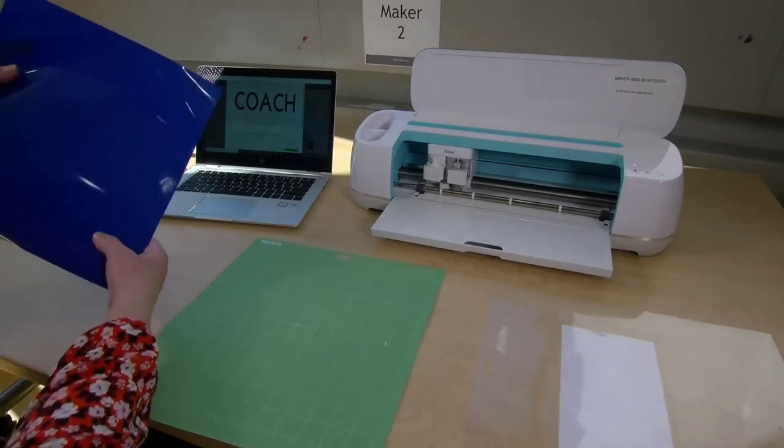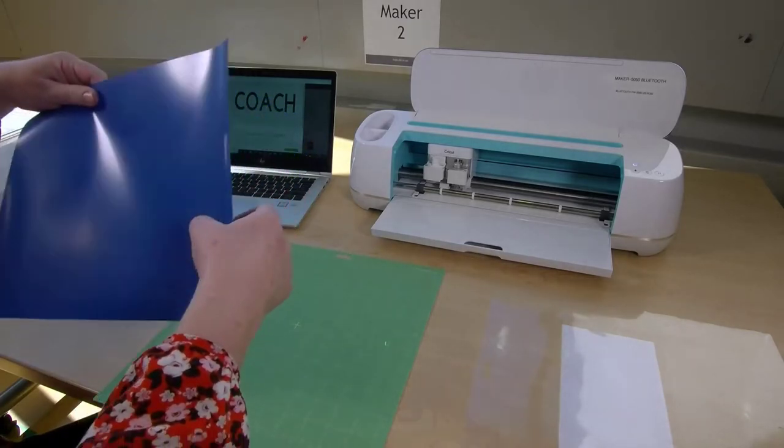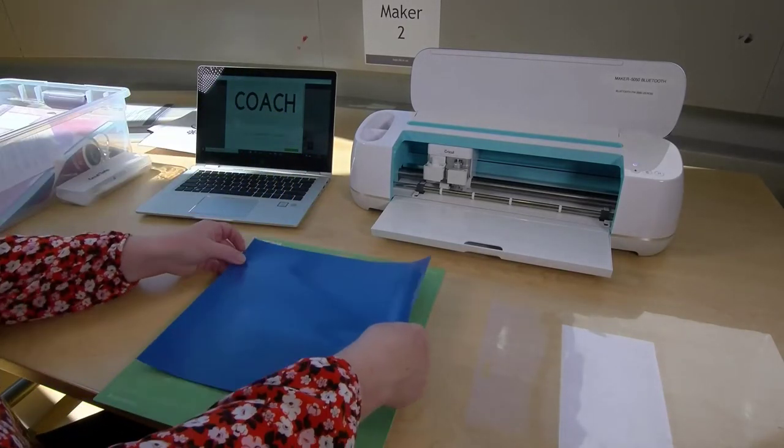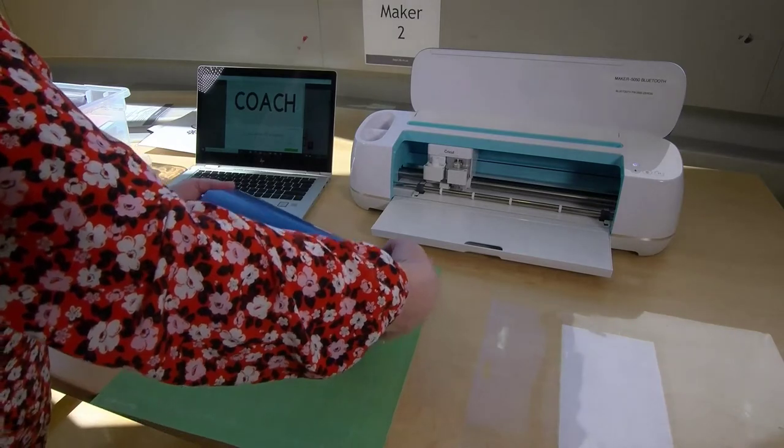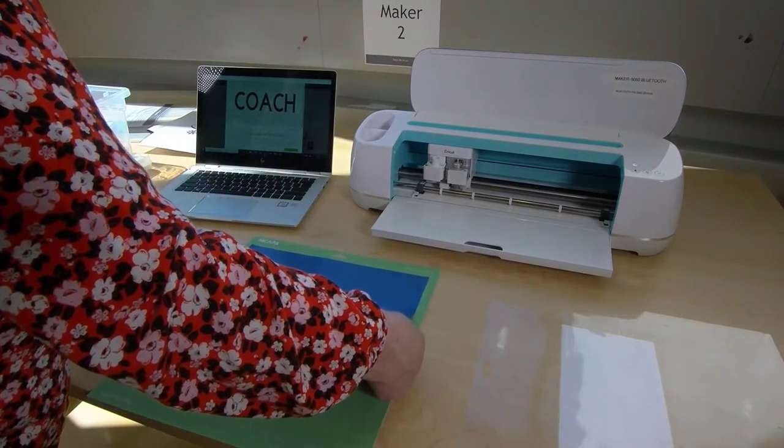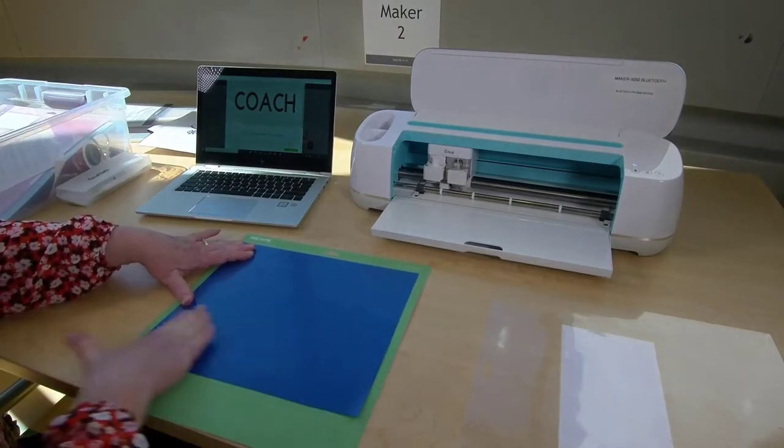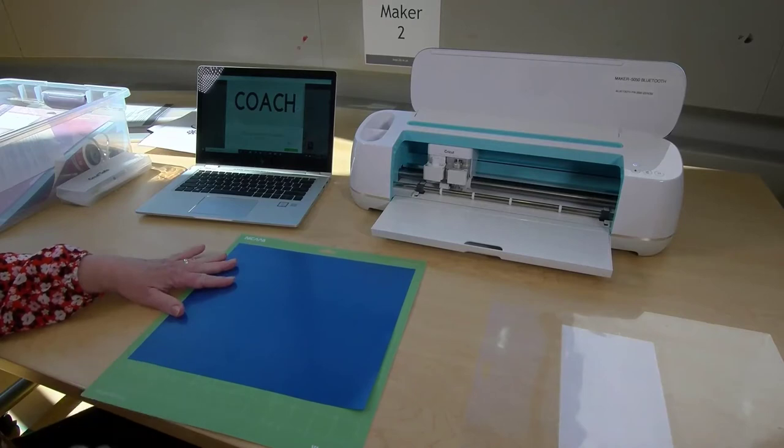The iron-on vinyl has a shiny side and a dull side. The shiny side is the top carrier sheet, and the dull side is the back of the vinyl. Adhere the sheet to the mat shiny side down. It should line up in the top left-hand corner of the mat. Smooth it out well to eliminate any bubbles.